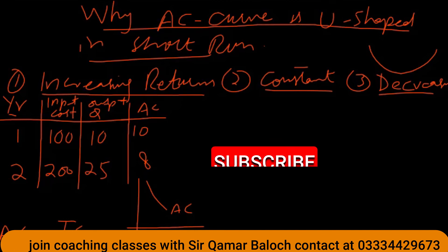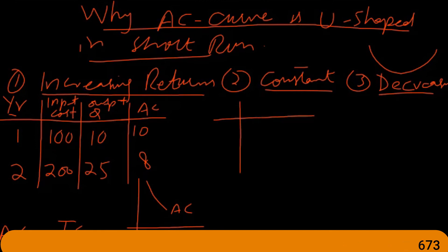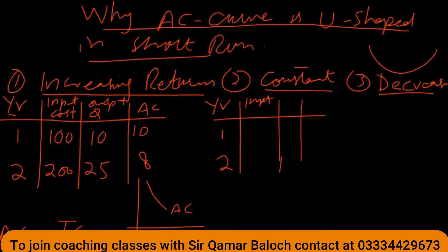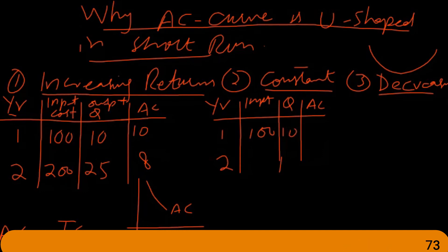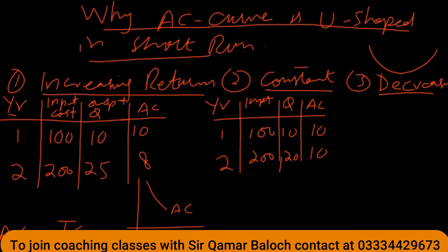In the case of constant returns to scale, if we double our input, output will be exactly double and average cost remains the same. In year 1, input $100 and output 10 gives average cost of $10. If we double input to $200, output becomes exactly 20, so average cost is again $10. The average cost curve is flat or constant in this segment.